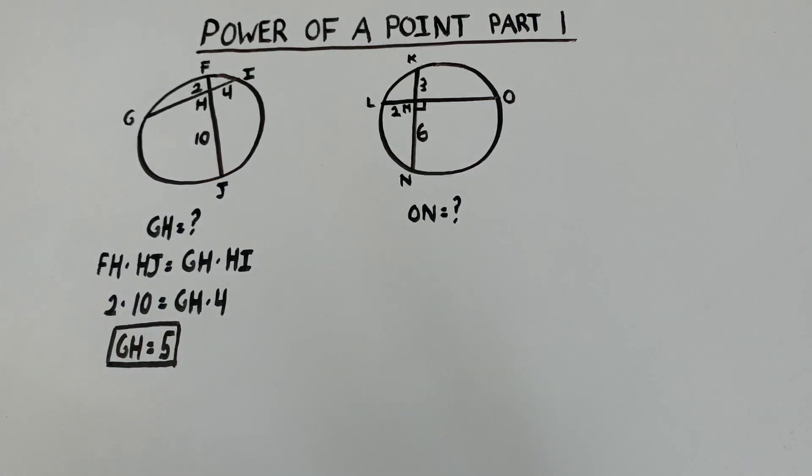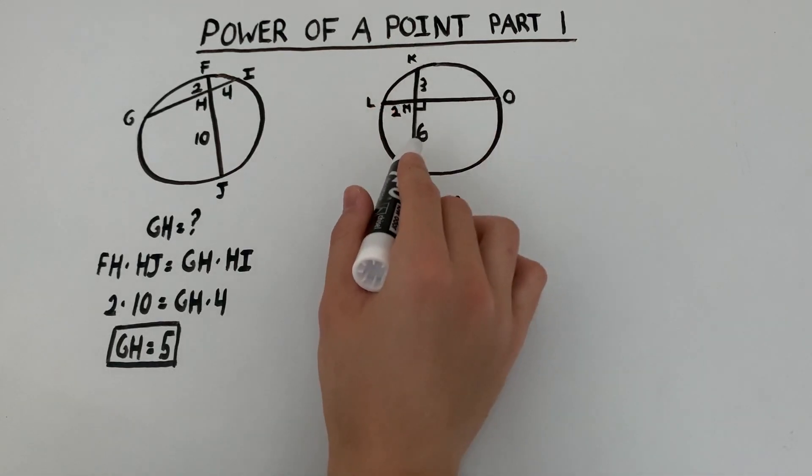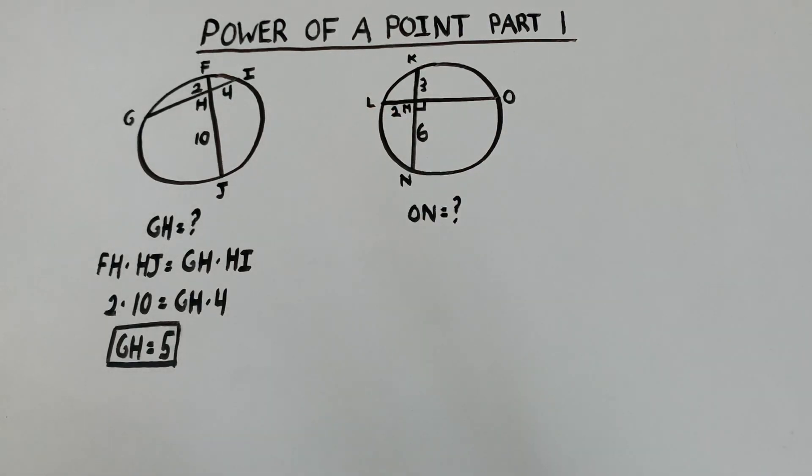Alright, let's take a look at the last example. So over here, LM is 2, KM is 3, MN is 6, and we need to find ON.